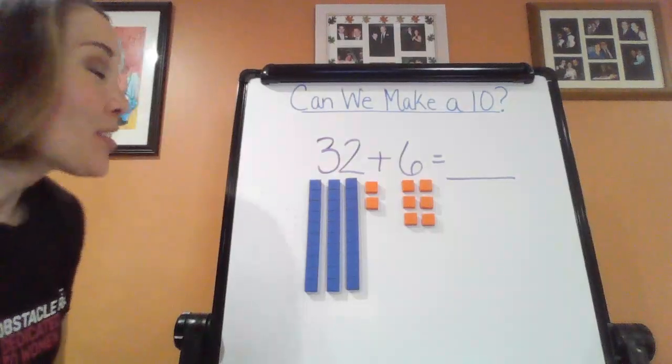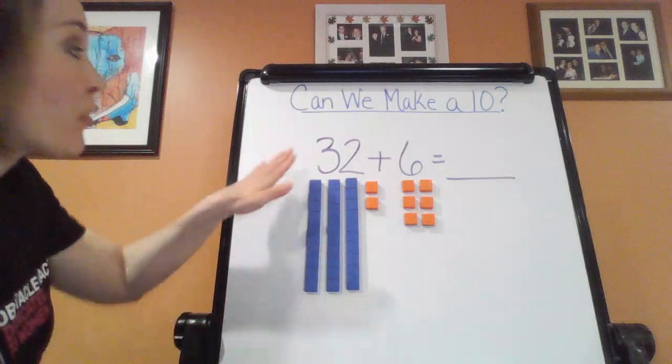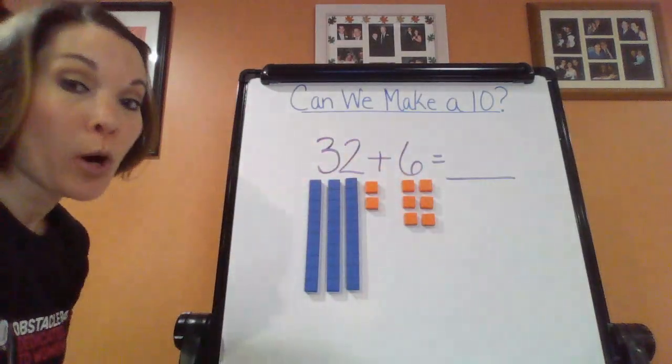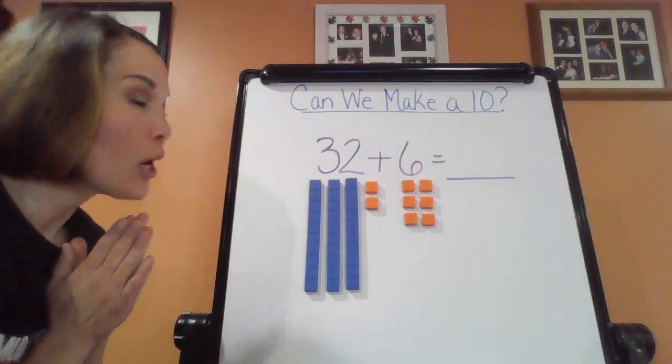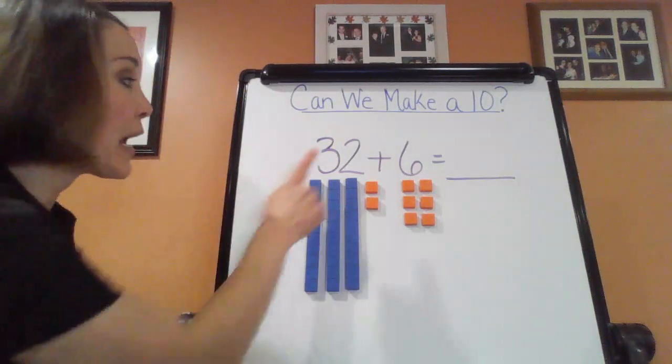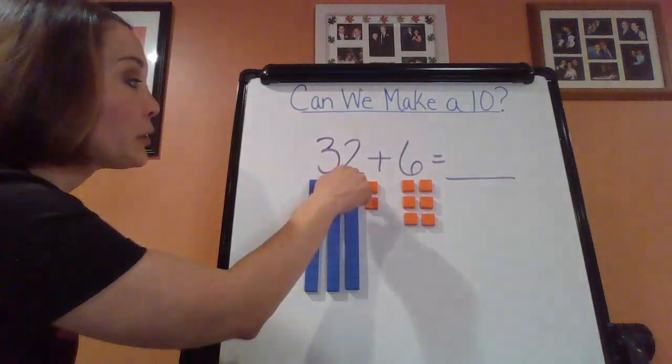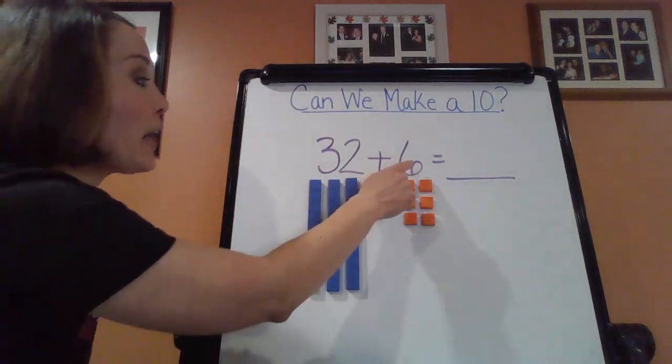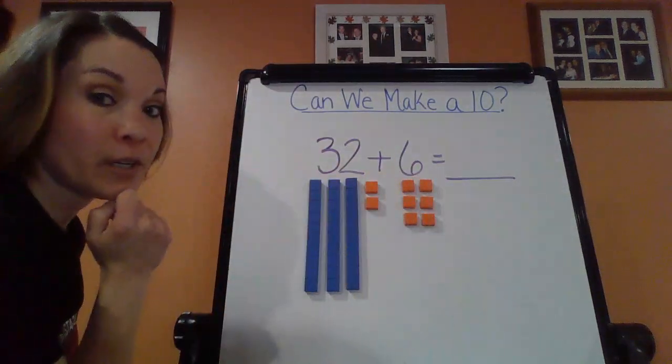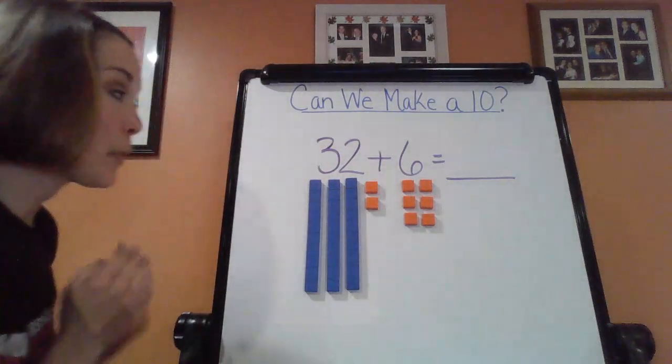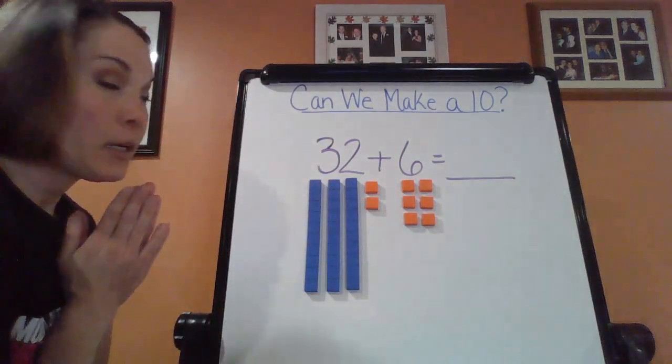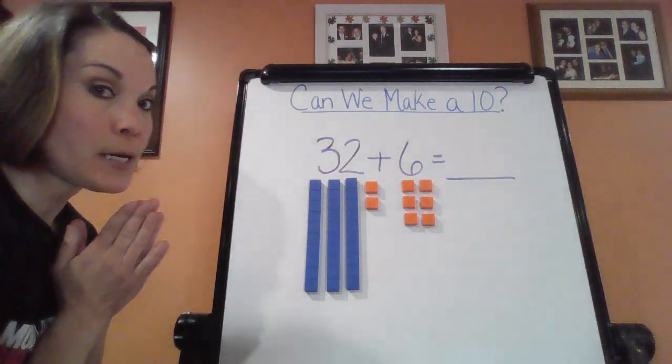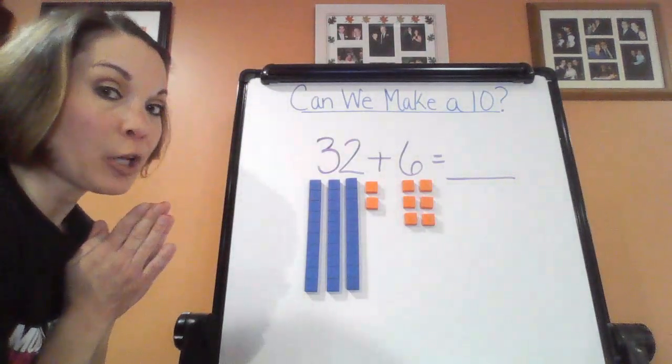Okay, we're back. So let's take a look at our new equation. We have 32 plus six more. So let's see. Can I make a 10 here? So let's look at my ones. I have two ones, and then I have six more ones.